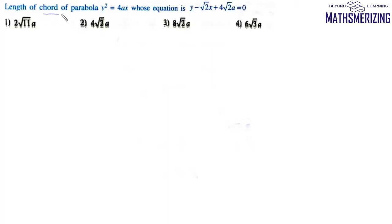The question is: find the length of chord of parabola y² = 4ax whose equation is y - √2x + 4√2a = 0.